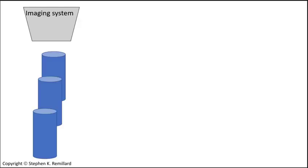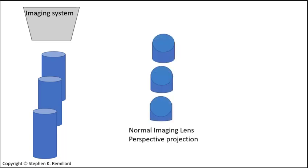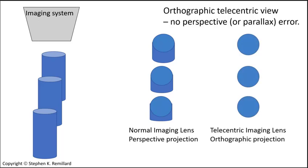If a normal imaging system is looking down on three cylinders, each cylinder will appear differently in the normal view, depending on the location of the cylinder relative to the optical axis. A telecentric view will present each cylinder as identical. With only the rays parallel to the optical axis making it through the lens, the sides of the cylinders will be difficult to perceive in a telecentric view.